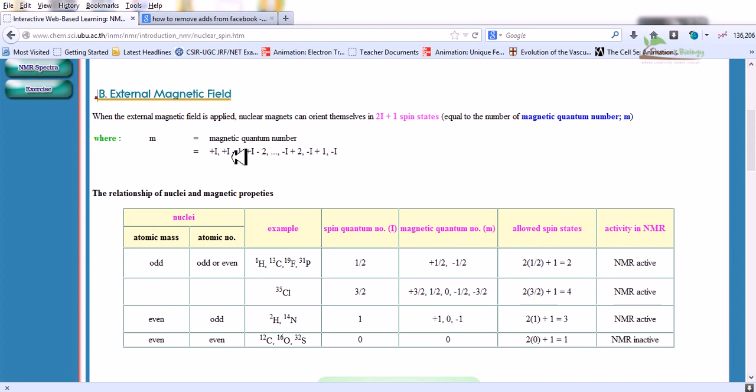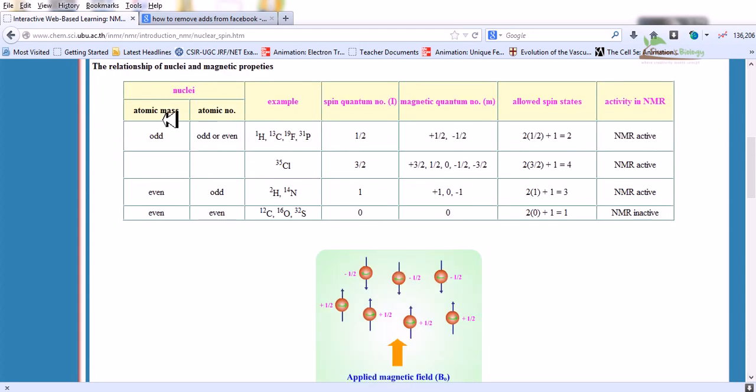The relationship of nuclei and magnetic properties are given here. If the atomic mass is odd and atomic number can be odd or even, for example hydrogen, carbon, fluorine and phosphorus, the spin quantum number will be half. As a result, magnetic quantum number will be plus half and minus half. The allowed spin is 2I plus 1, so 2 times half plus 1 equals 2. That is definitely NMR active.